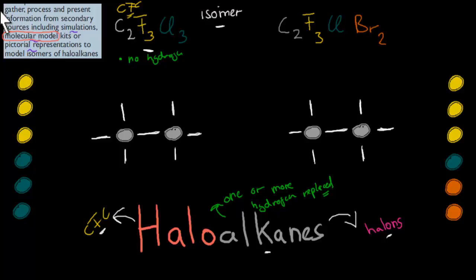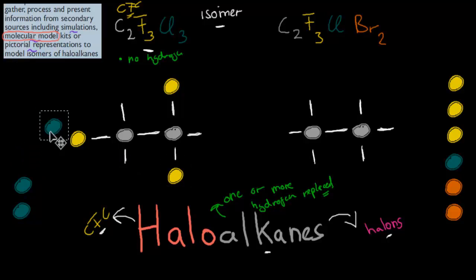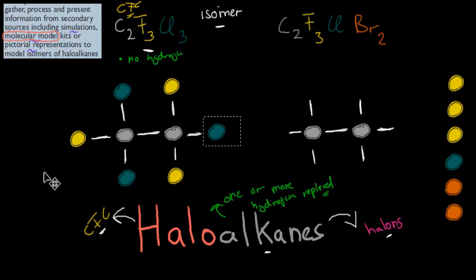If I grab these balls, I'll just grab them randomly. Let's say we put that one there, and that one there, and that one there, and then I grab the chlorine. These yellow ones are fluorine, and the green ones are chlorine. So now I've made one structure of this chemical formula, C2F3Cl3.